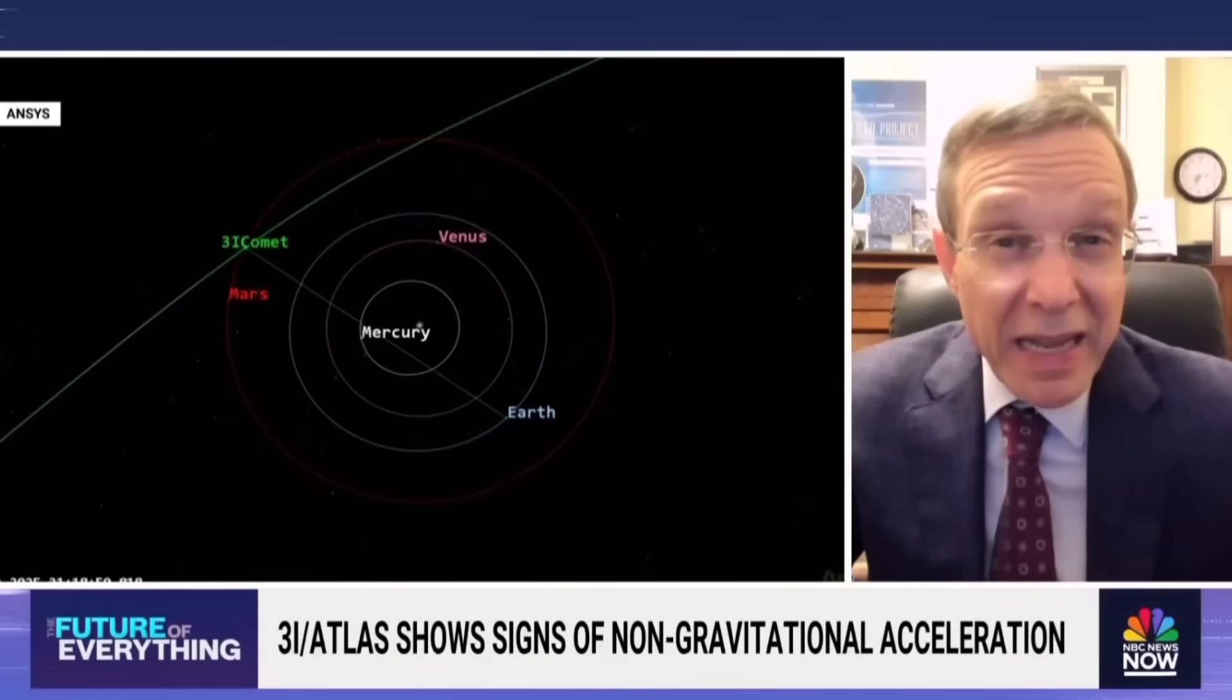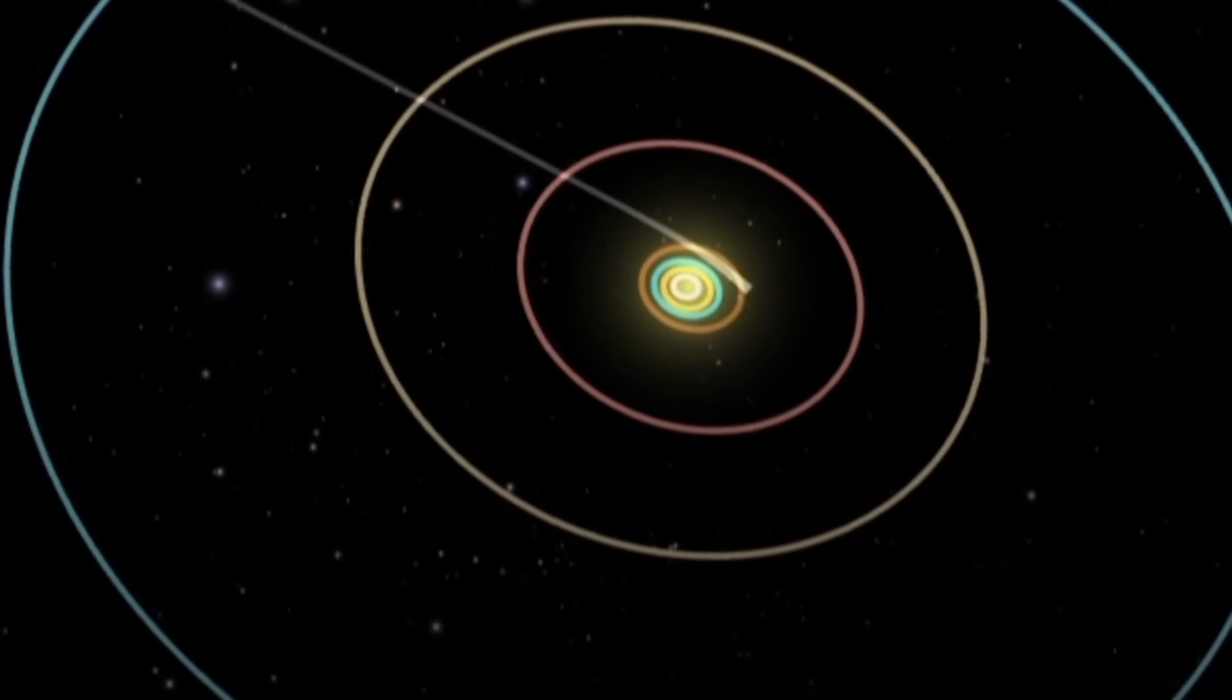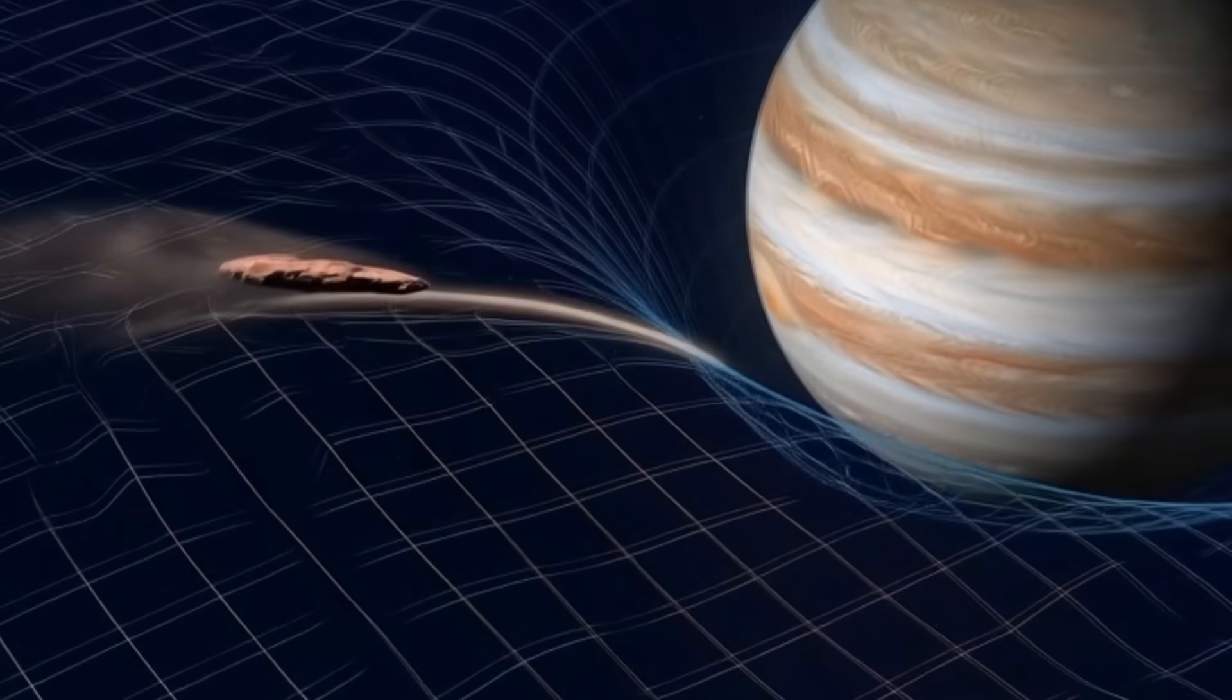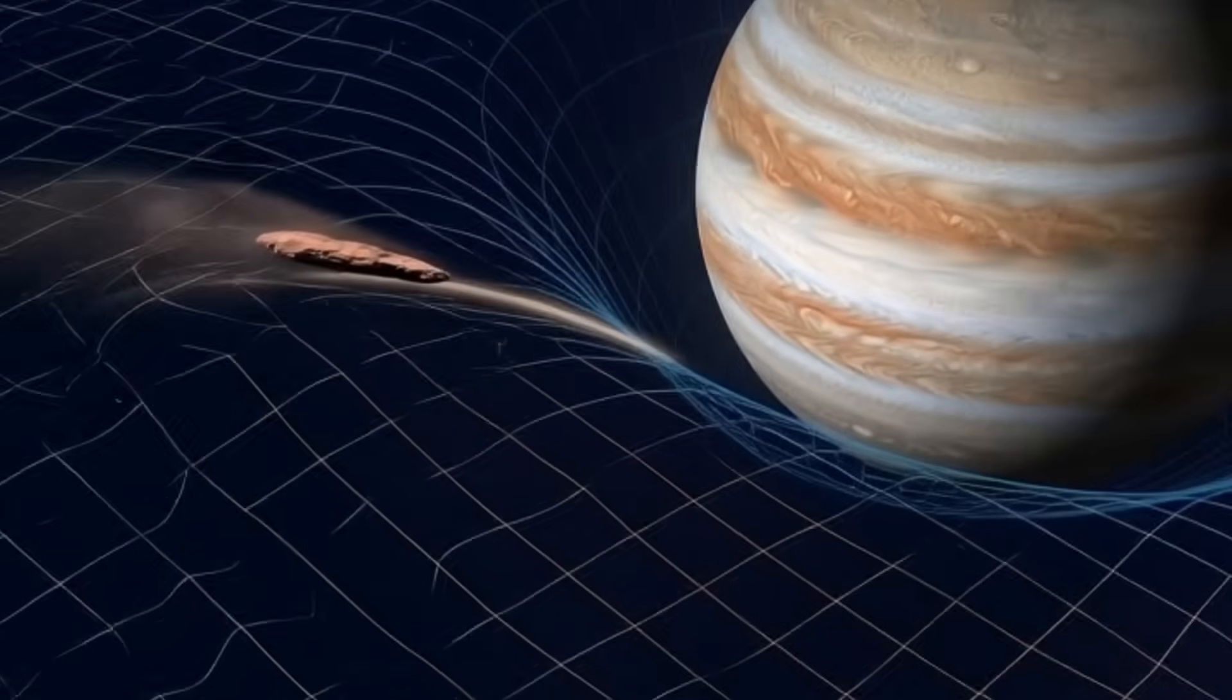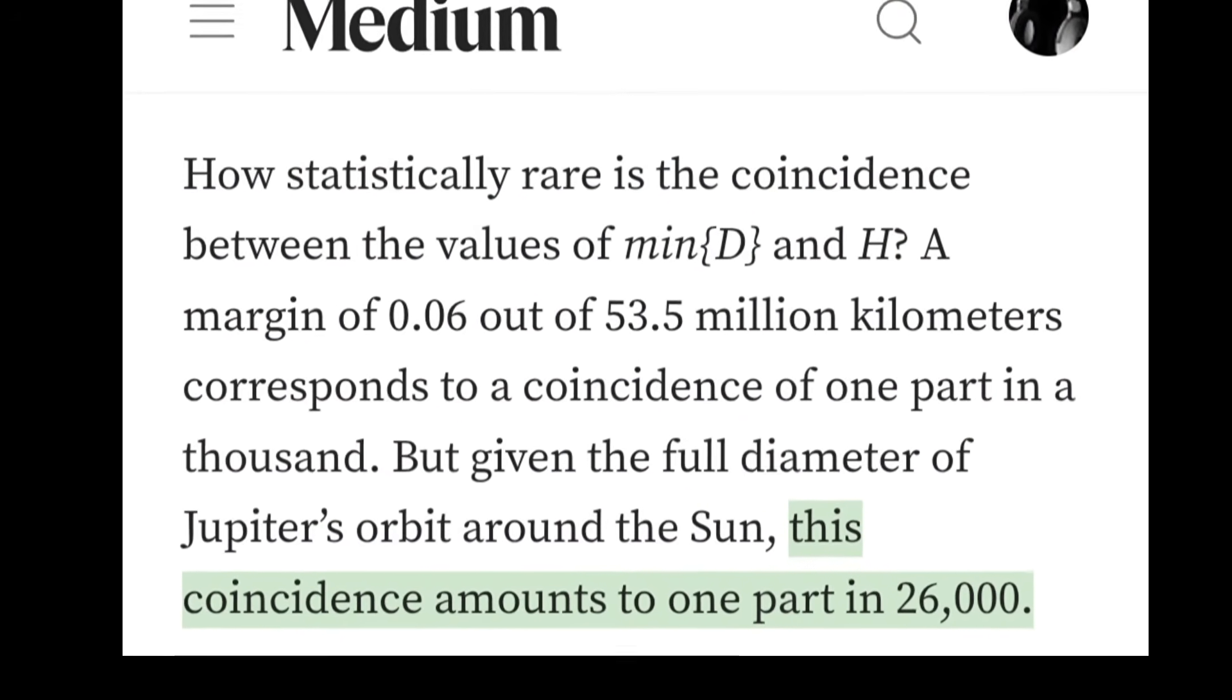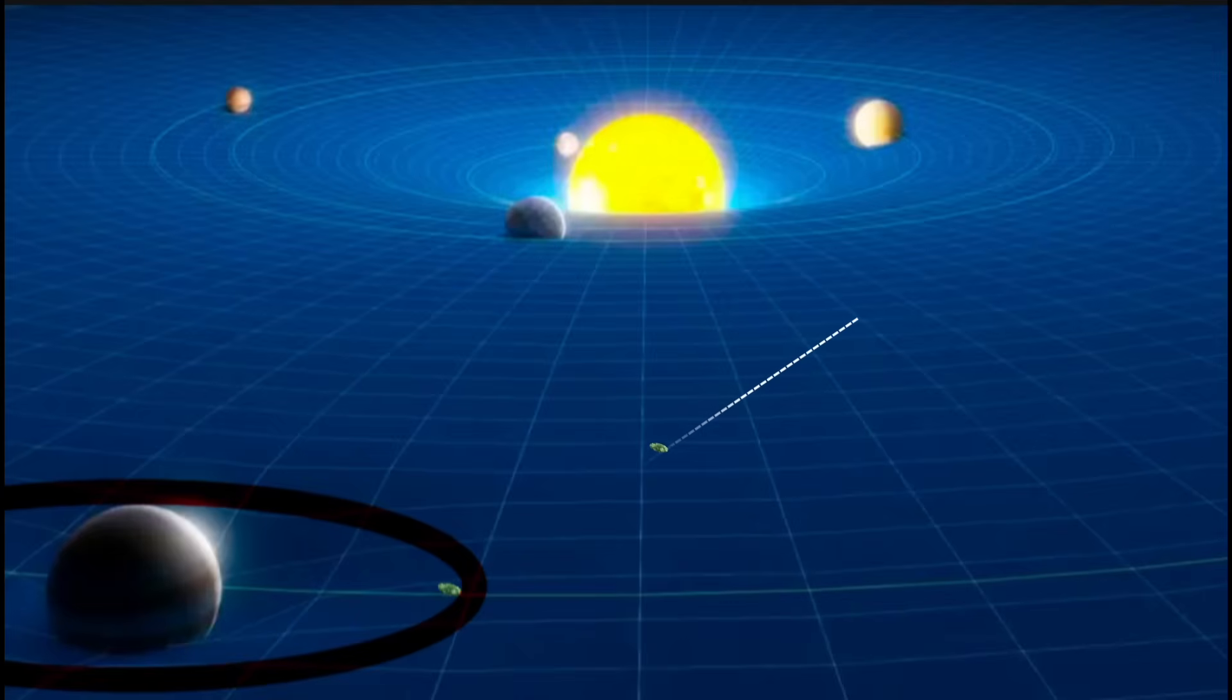Loeb argues this is not likely to be a coincidence. He says the non-gravitational acceleration measured is just right to steer this object so it just touches that critical radius. If 3i Atlas were purely a random comet, why would it do that? Scientists claim that the probability of a typical comet ending up on such a precisely aligned path near Jupiter is only 1 in 26,000, based on Jupiter's entire orbit.